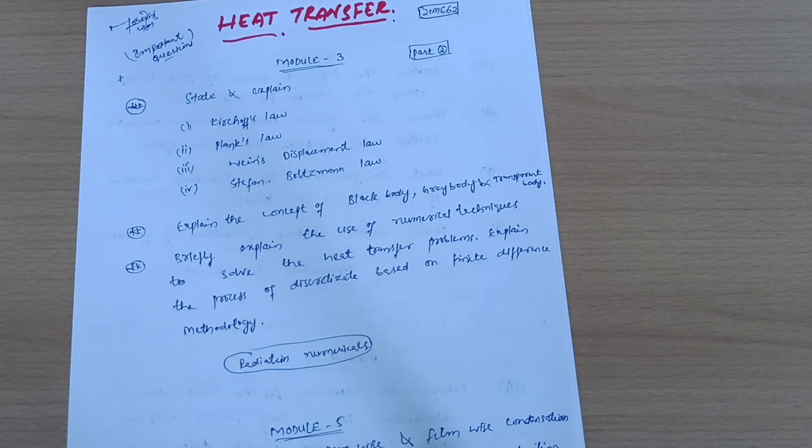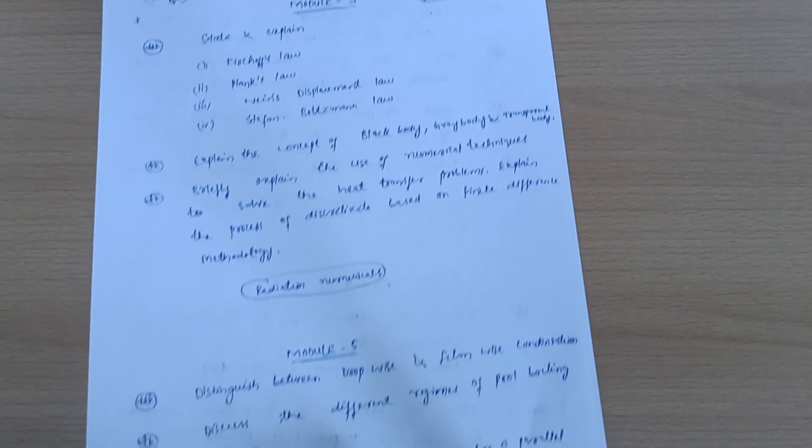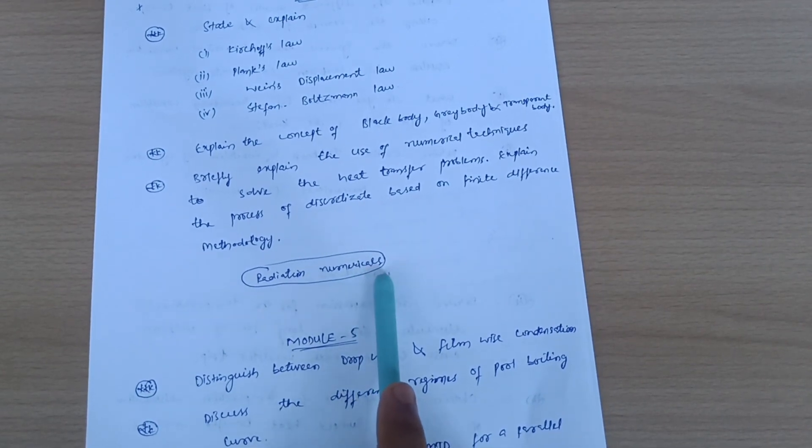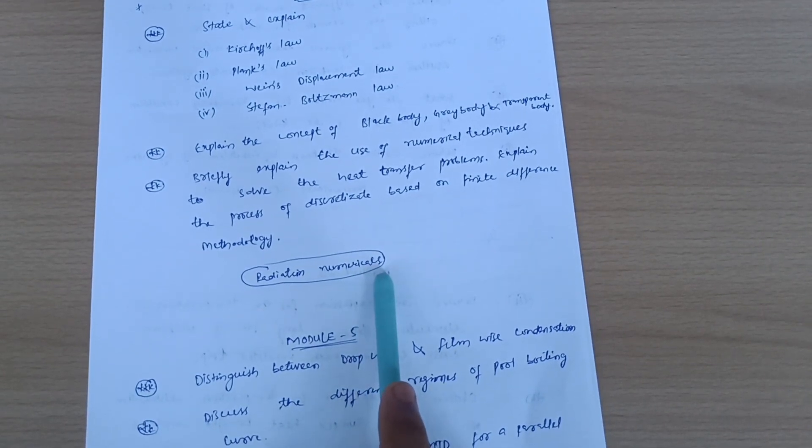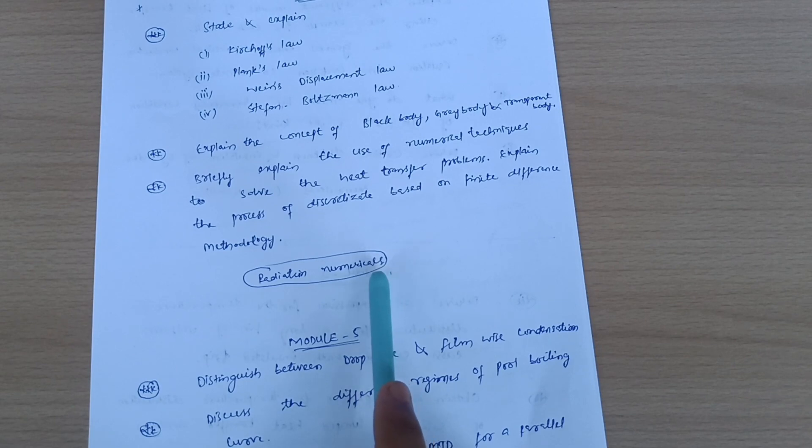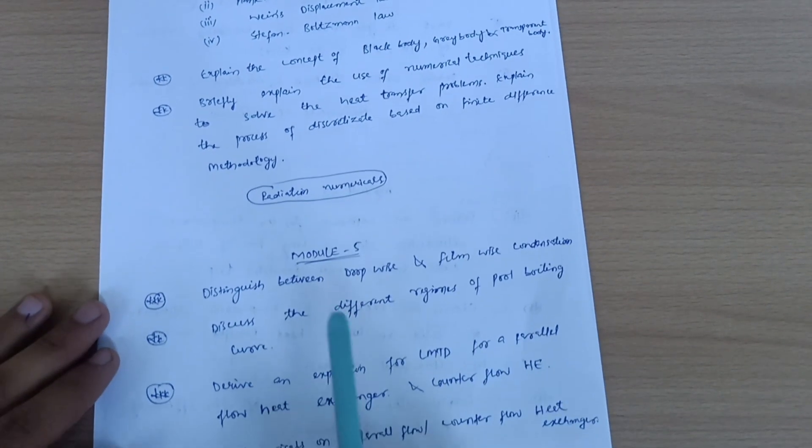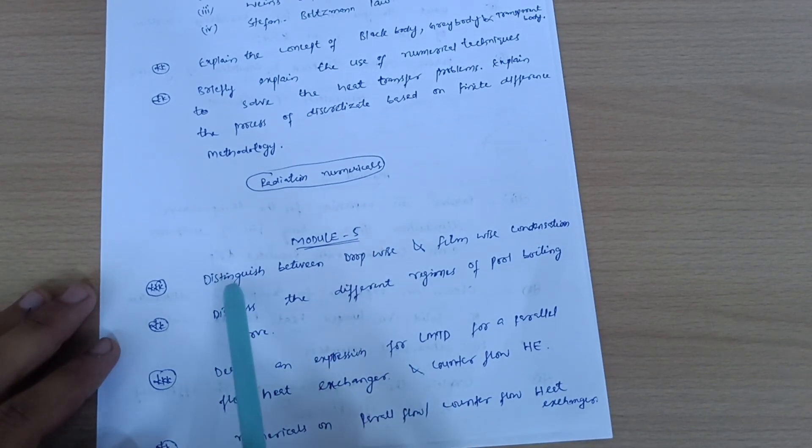These are the three theoretical questions which you have to go through in Module 3, and also go through the radiation numericals. For numerical practice, refer 18 ME 63 papers - previous year papers. If you are not getting them, let me know in the comment section and I will upload those important papers on my Instagram account. I will provide the link later on if you want the papers for practicing the numerical part.